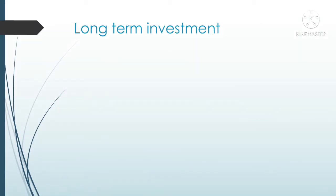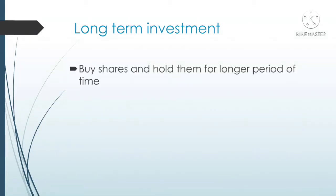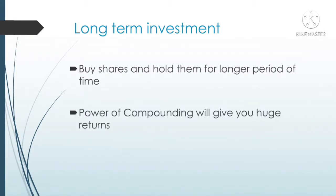Let's see how a person can create huge wealth by doing long term investment. Simply choose a blue chip stock, buy shares of the blue chip company and hold it for a longer period of time — say 10 years, 20 years, 30 years. Blue chip companies are those whose financials are very strong and they have huge growth potential and can give you huge returns in future. If you hold the stock for a long run, the power of compounding takes place and it can give you returns of 5X, 10X, even 20X of your capital.